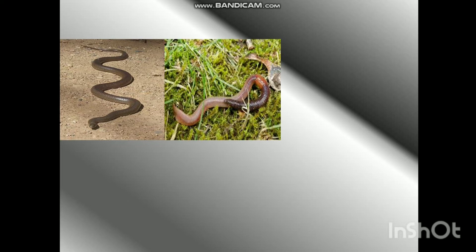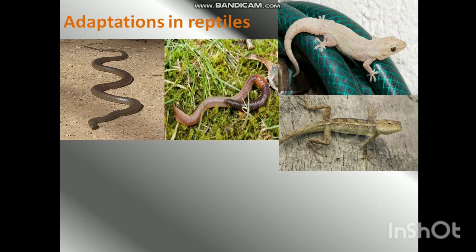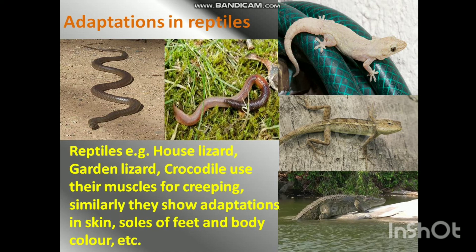Have you ever observed how snakes and earthworms creep? Which organs do they use for creeping? Let's study adaptations in reptiles. Reptiles like house lizard, garden lizard, and crocodile use their muscles for creeping. They also show adaptations in skin, soles of feet, and body color. For example, snakes have scaly skin while lizards have clawed toes.